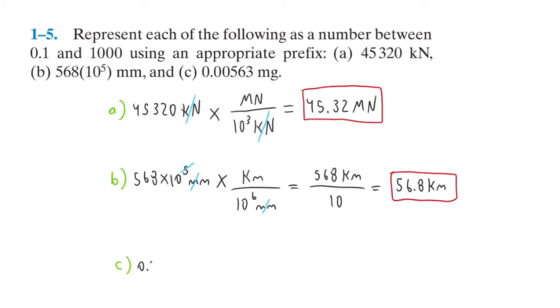Part C: We have 0.00563 milligrams. So this time, we want to make the number bigger. So we're going to use a smaller prefix. We can try micrograms.